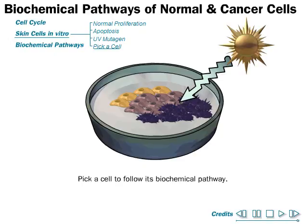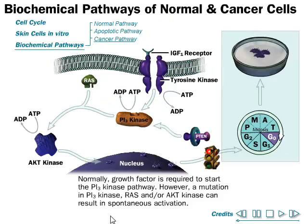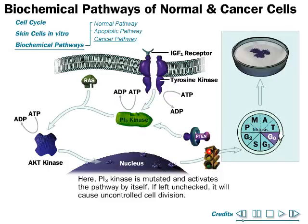Now let's talk about cancerous cells and the biochemical pathway that converts a normal cell into a cancerous one. While growth factor is normally required to start the PI3 kinase pathway, a mutation in PI3 kinase, Ras, or AKT kinase can result in spontaneous activation. This spontaneous activation leads to the formation of cancerous cells. A mutated PI3 kinase can activate the pathway by itself, left unchecked, causing uncontrolled cell division.